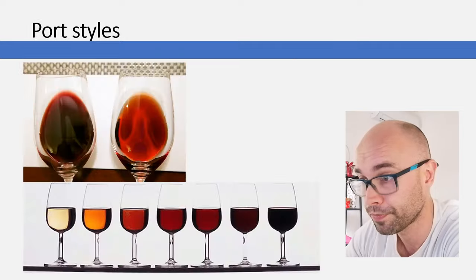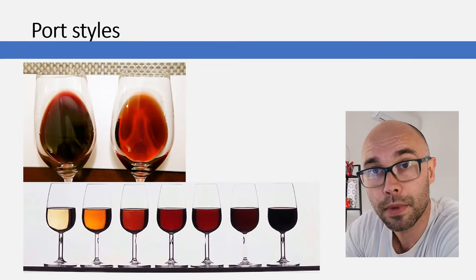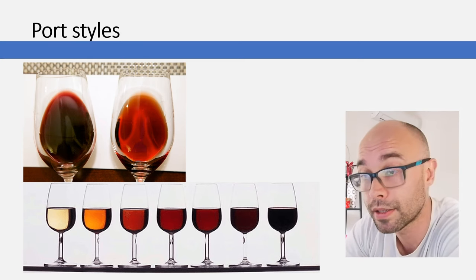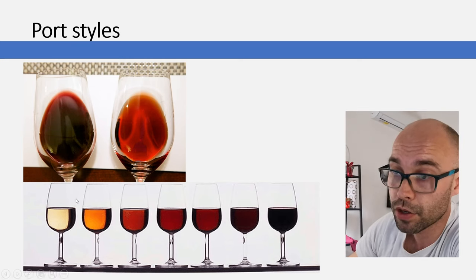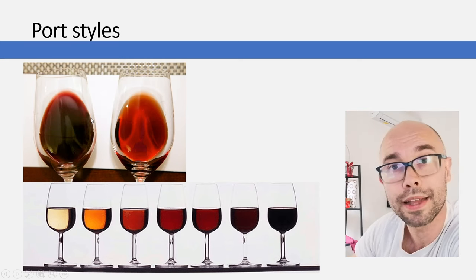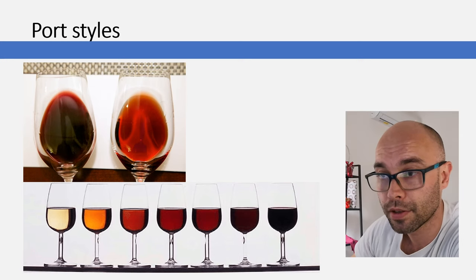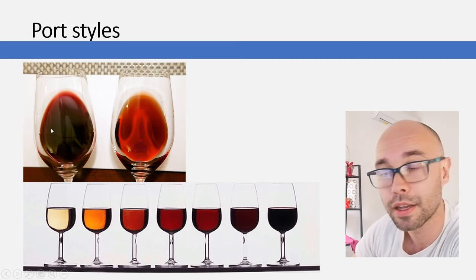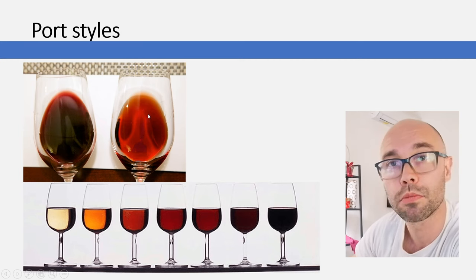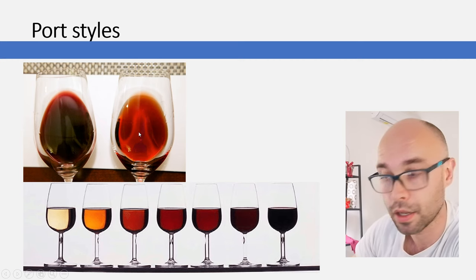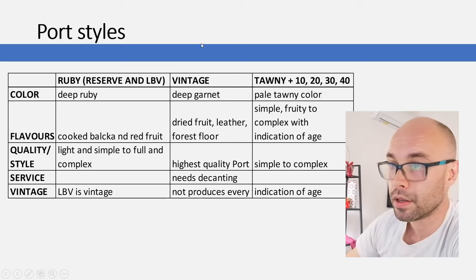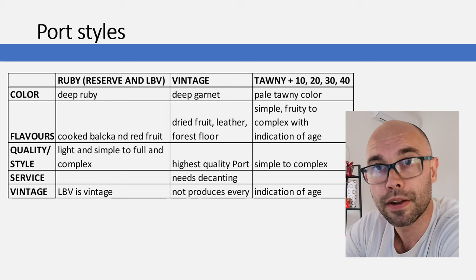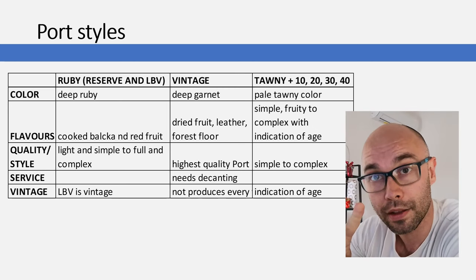Historically, color and tannin extraction was done by treading grapes with feet; today robotic machines are also used to automate this process. There are white and rosé styles of port, but we'll focus on red. The two main styles of port are ruby — deep ruby or garnet in color — and tawny, which is paler with a tawny color.